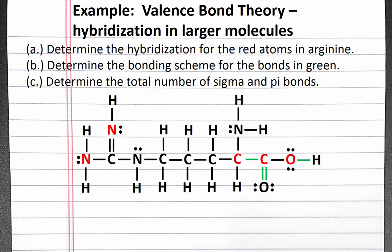In this example problem, we look at the hybridization in a larger molecule. Our problem reads: first, determine the hybridization for the red atoms in arginine. Second, determine the bonding scheme for the bonds in green. Third, determine the total number of sigma and pi bonds.